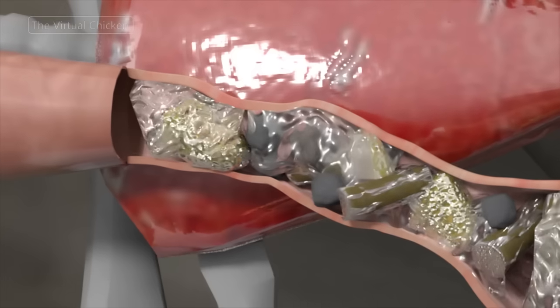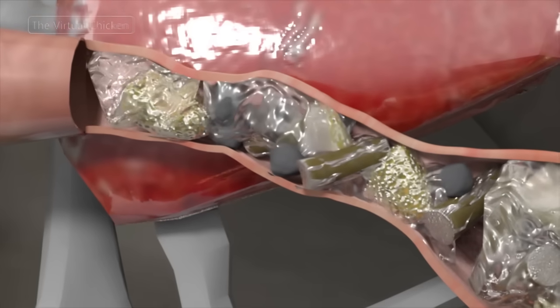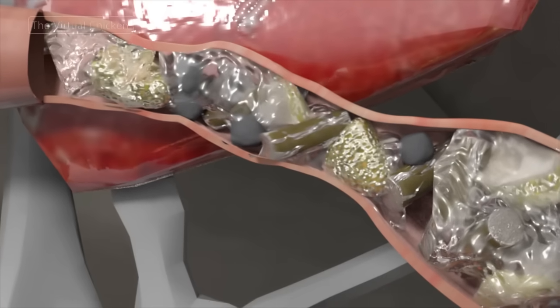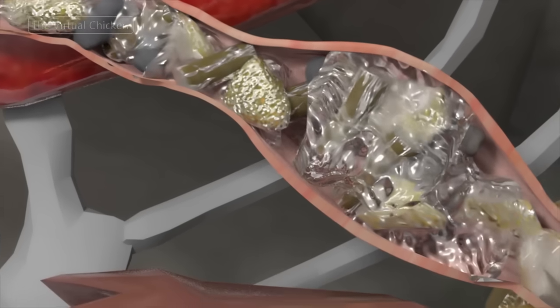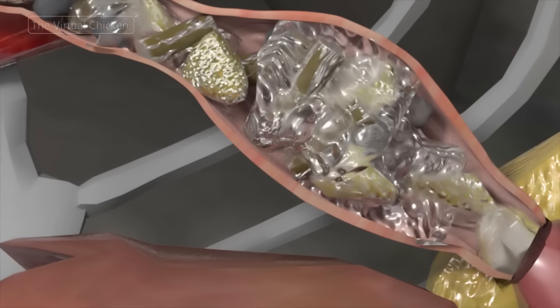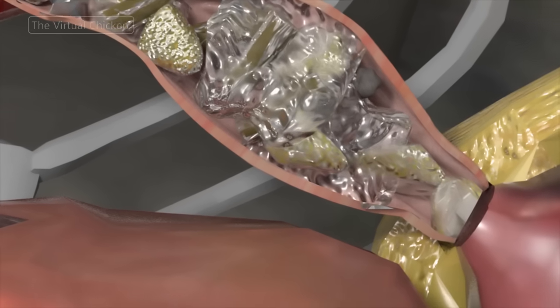The acid and digestive enzymes in the proventriculus break down food more significantly than the enzymes secreted by the salivary glands, but at this point the food has not yet been ground, only softened before it moves to the gizzard.